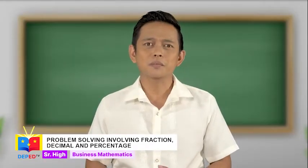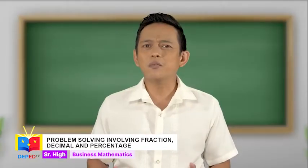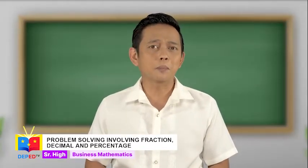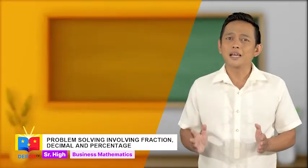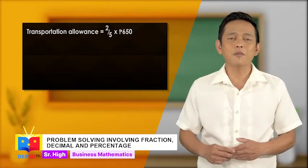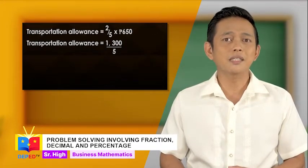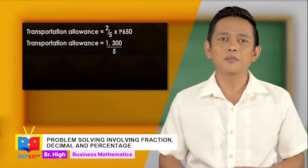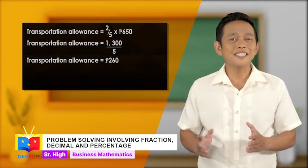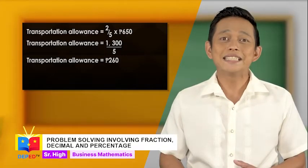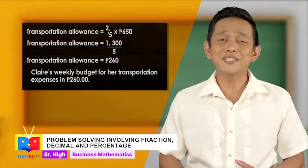Identify the equation to be used. Transportation allowance is equal to 2/5 times 650 pesos. Since the given is a fraction of the weekly allowance, we have to multiply 2/5 by 650 pesos. Performing the indicated operation: 2/5 times 650 pesos equals 1,300 over 5. Dividing 1,300 by 5, transportation allowance is equal to 260 pesos. The final answer is: Claire's weekly budget for her transportation expenses is 260 pesos.